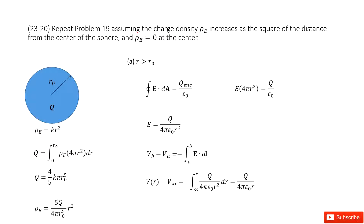This is a follow-up for problem 19. In this case, we know the charge density increases as the square of the distance from the center of the spherical object. At the center, rho-e equals zero. We need to find the electric potential and the electric fields everywhere, and then plot the graphs.